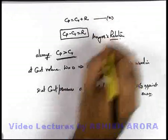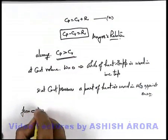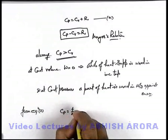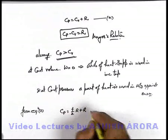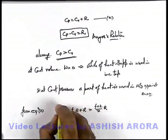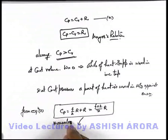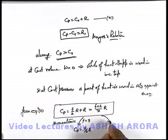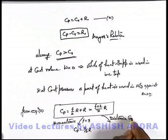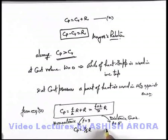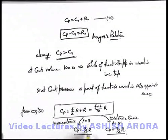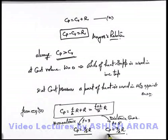From Mayer's relation, Cp = Cv + R = (f/2)R + R = (f+2)/2 · R. For monoatomic gas molecules where f = 3, Cp = (5/2)R. For diatomic gas molecules where f = 5, Cp = (7/2)R. Even for higher polyatomic gas molecules — linear or non-linear — we can find Cp depending on the number of degrees of freedom.